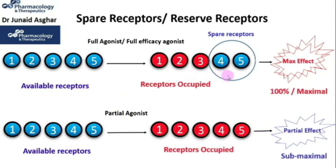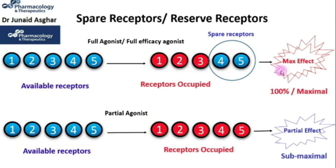Full agonists allow maximal response without total receptor occupancy, or we may say that full agonists produce a maximal response without occupying the whole population of receptors in a tissue. In other words, full agonists have to bind to only a portion of receptors to produce a maximal response, and thus have a reserve of unoccupied receptors which are called spare receptors or reserve receptors.